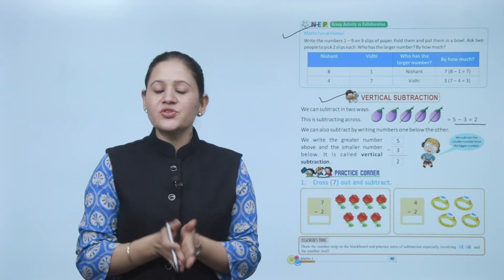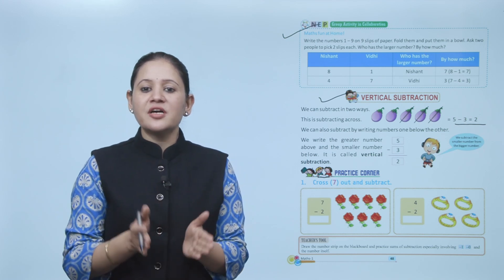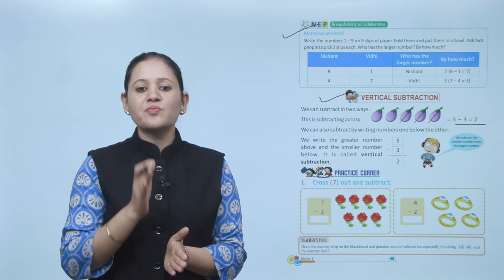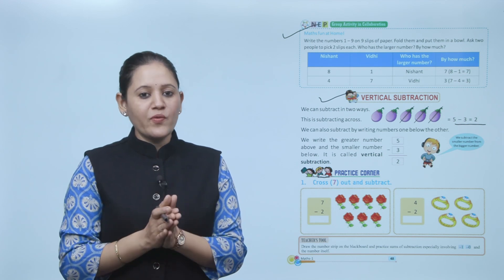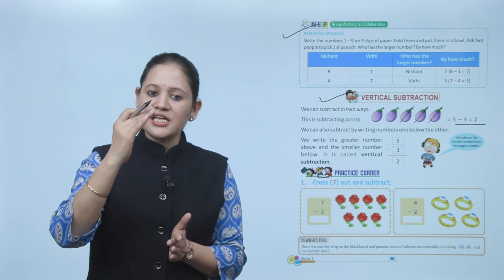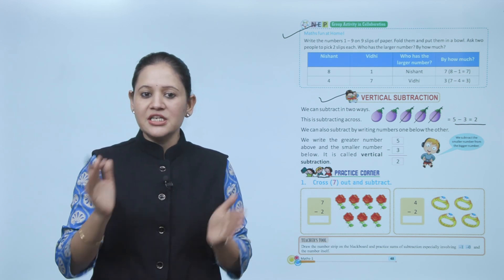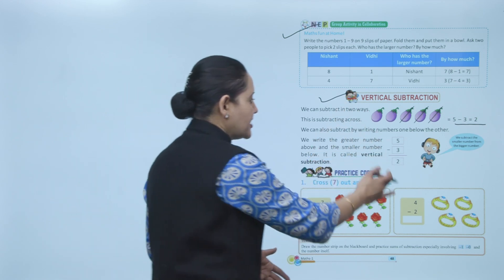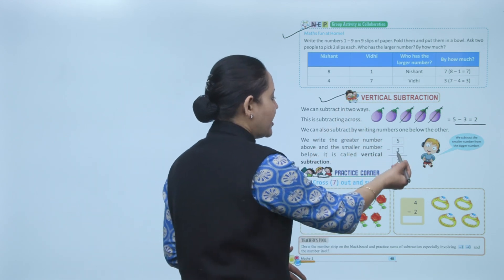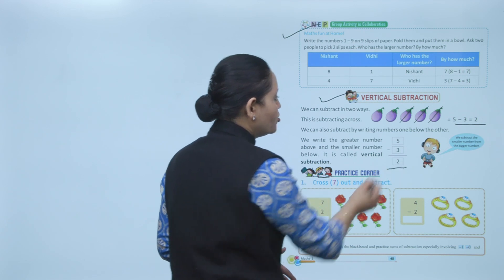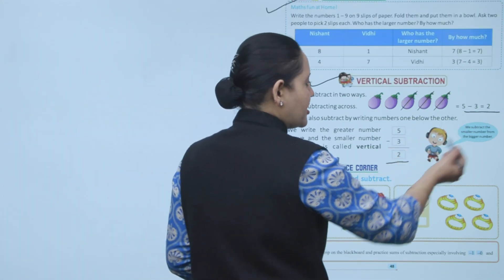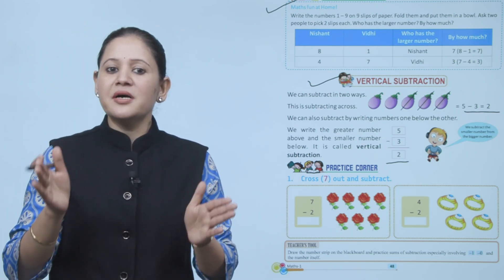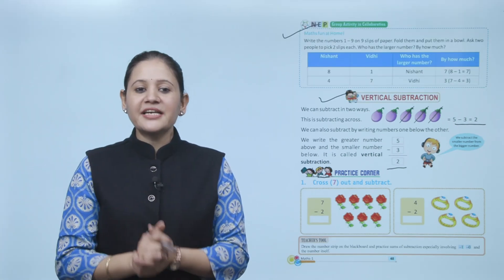We can also subtract by writing numbers one below the other. We write the greater number above and the smaller number below — we always write the bigger number on top and the smaller number below. This is called vertical subtraction. So 5 minus 3 equals 2. Always subtract the smaller number from the bigger number.